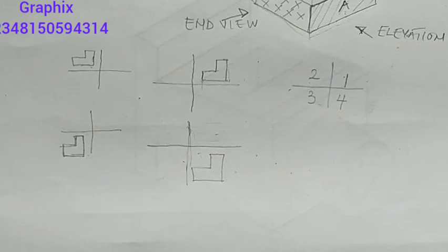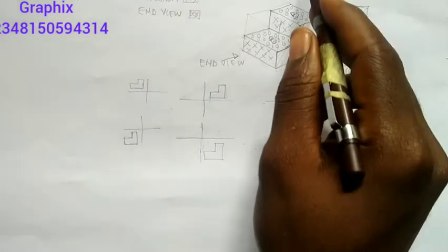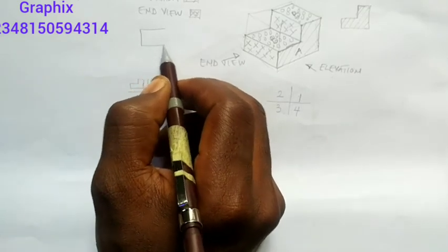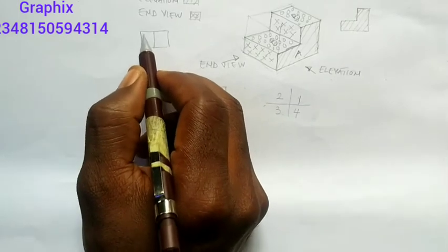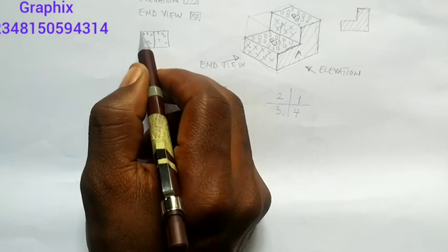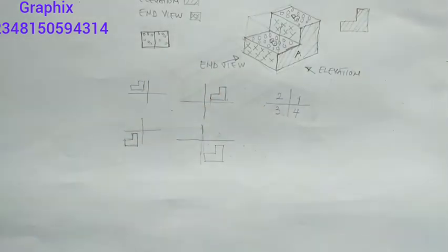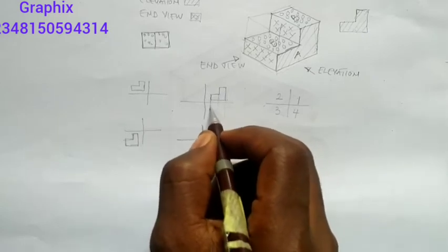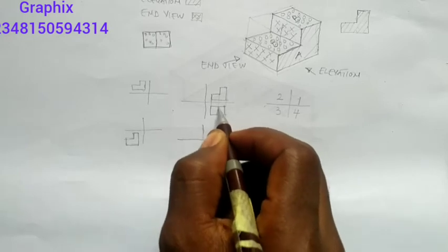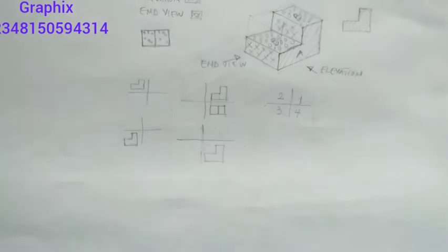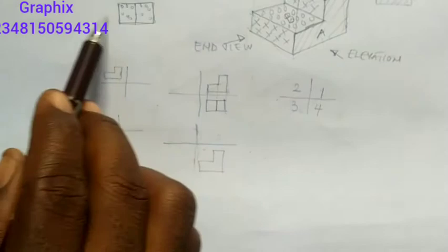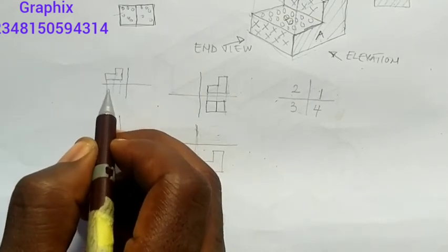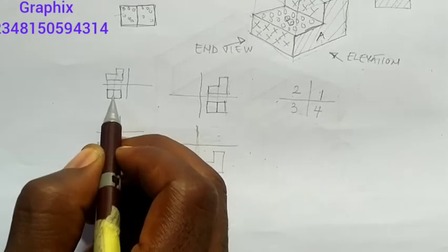The next thing to understand is that if I am looking from the top, I'll see my plan. The plan is always under the elevation in first angle projection — that's what you should know. So I'm having my plan here, always under the elevation in first angle.